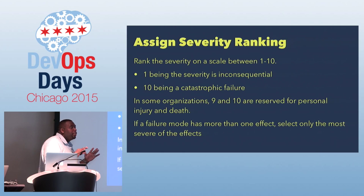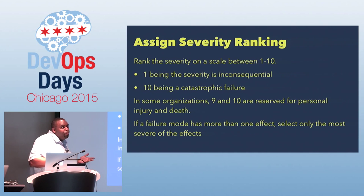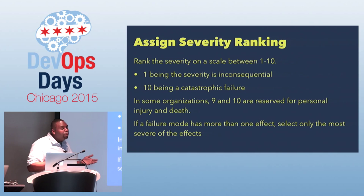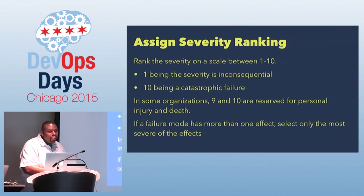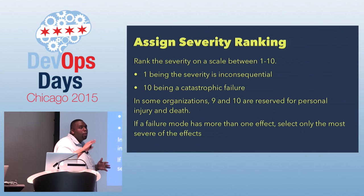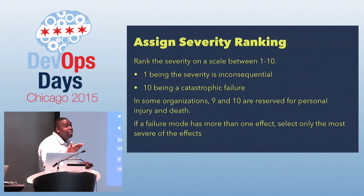Everything gets assigned a severity ranking — basically, if this happened, how bad is it? One being a minor inconvenience, 10 being a catastrophic failure. In some organizations, they reserve 9 and 10 specifically for customer death. If a failure mode has more than one effect, we always take the highest ranking. Let's say the database server is down — we'd probably rank that an 8 or 9, because now we're not processing credit cards. That's a pretty big deal.